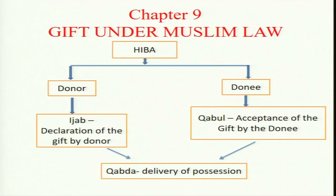Once possession of the property is delivered, that is known as qabda — Q-A-B-D-A. So there are three important components of Muslim gift: donor, donee, and qabda — delivery of possession. The donor makes an offer — ijab — declaring his intention to transfer property by way of gift.